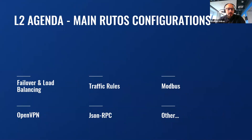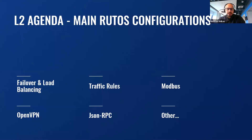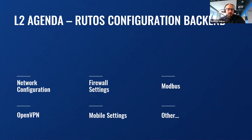Talking about the first part — main RUTOS configurations — for those who do not know, RUTOS is our operating system. Our products are based on this operating system, and through many years of development we managed to make almost a perfect system for our hardware. You will be able to understand specific load balancing functionality, set traffic rules, and configure industrial protocols such as Modbus. Going to the backend, you will learn how to configure OpenVPN from network rules, set mobile and firewall settings. Basically, you will be almost a professional with our products.